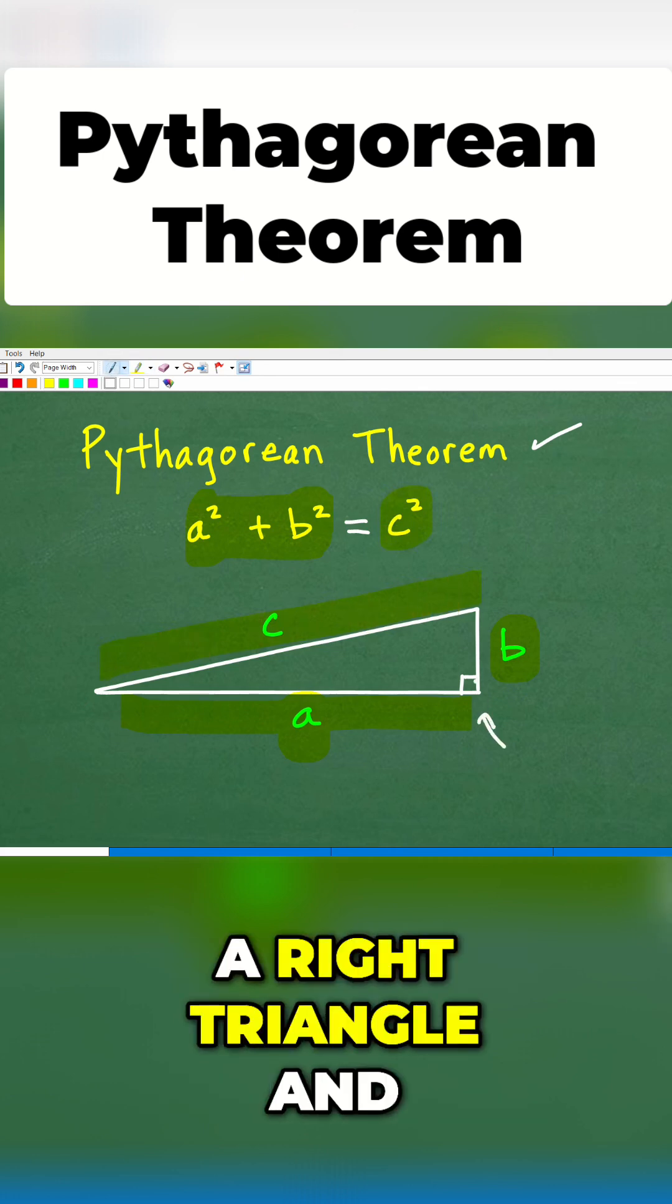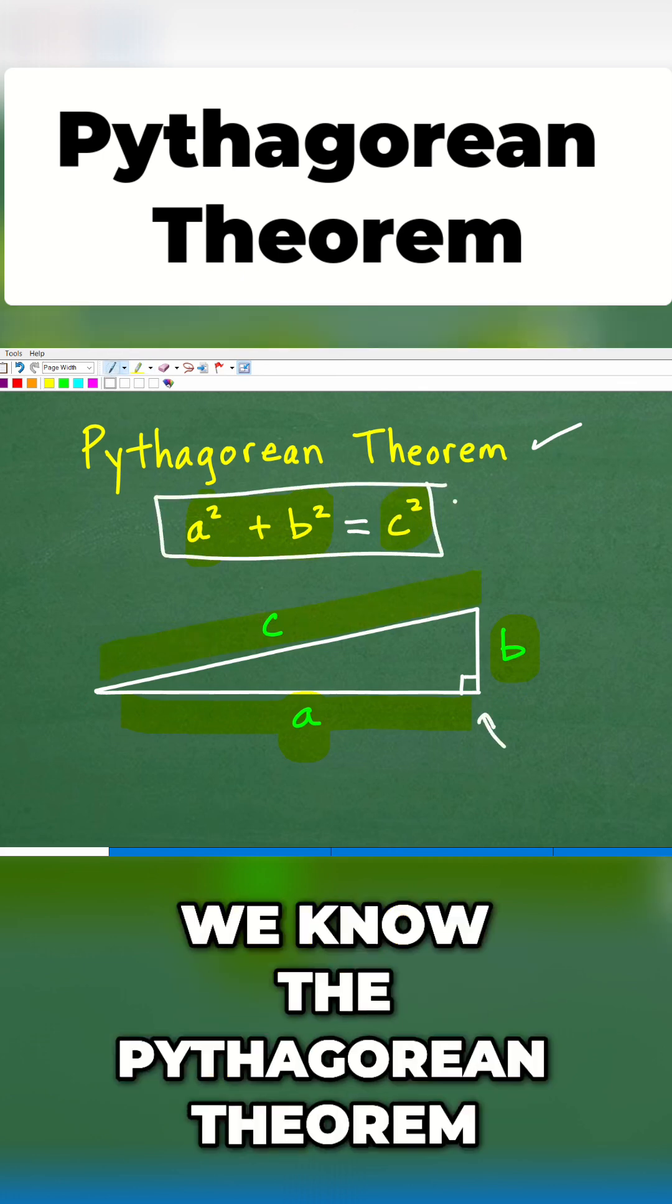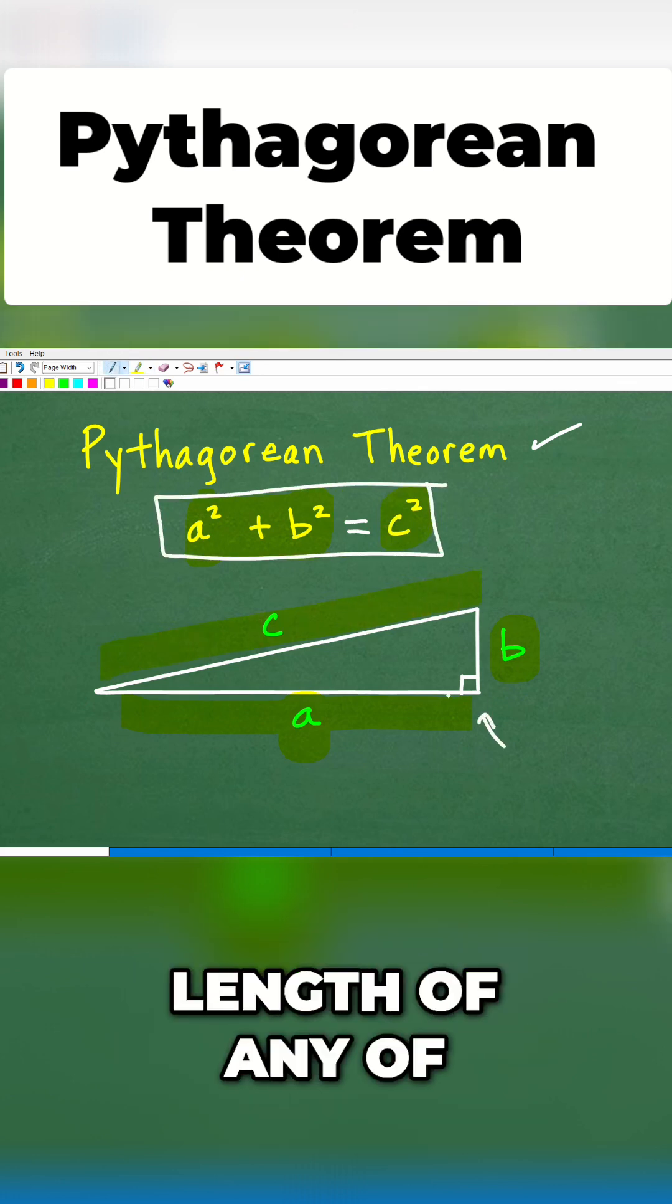So if we have a right triangle and we know the Pythagorean theorem, we can find the length of any of these sides.